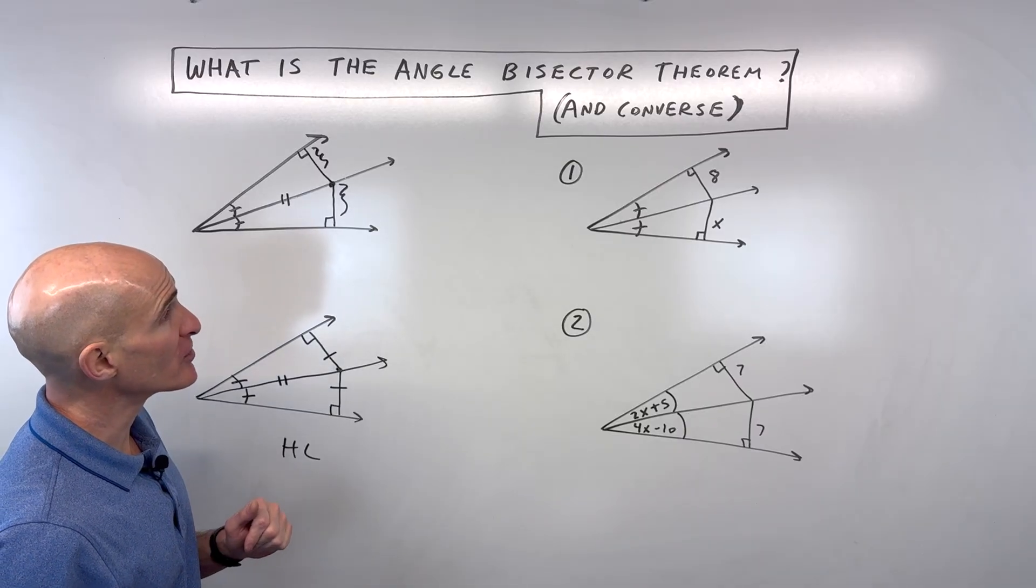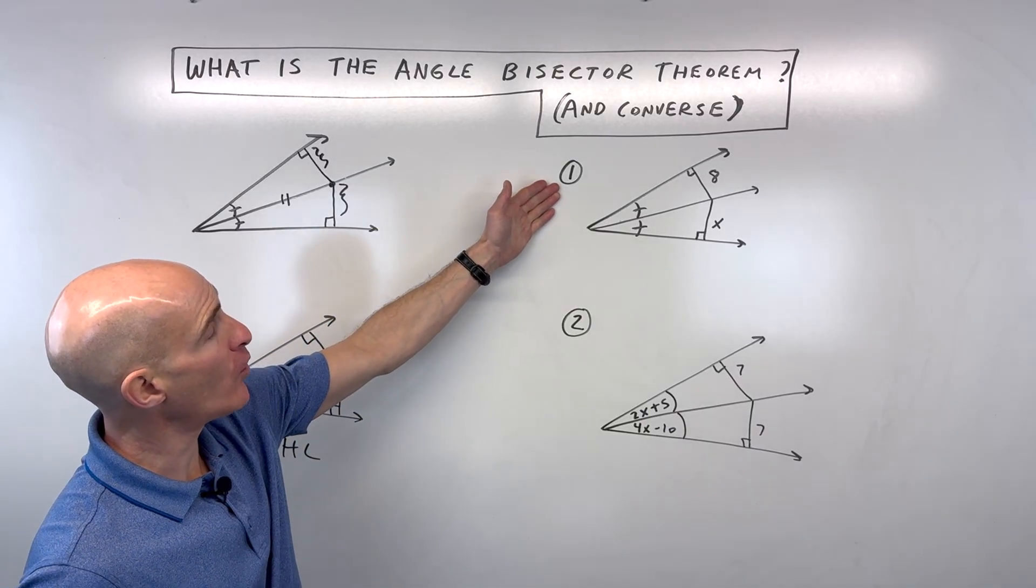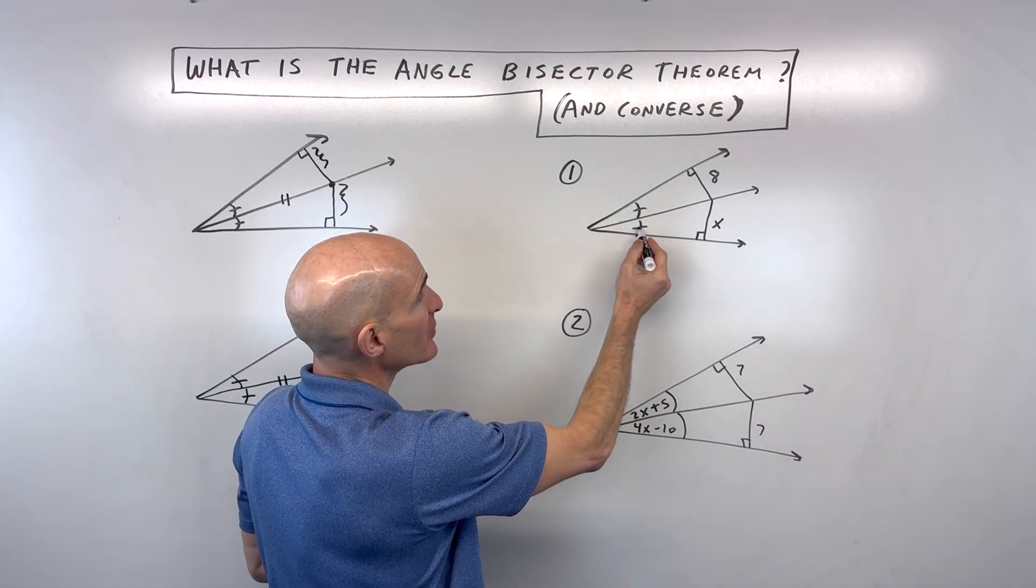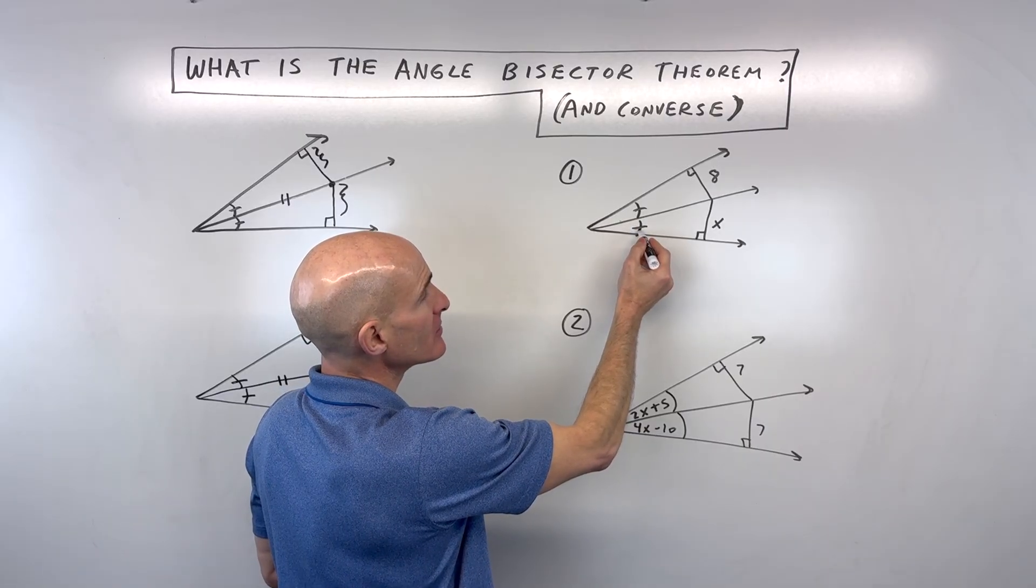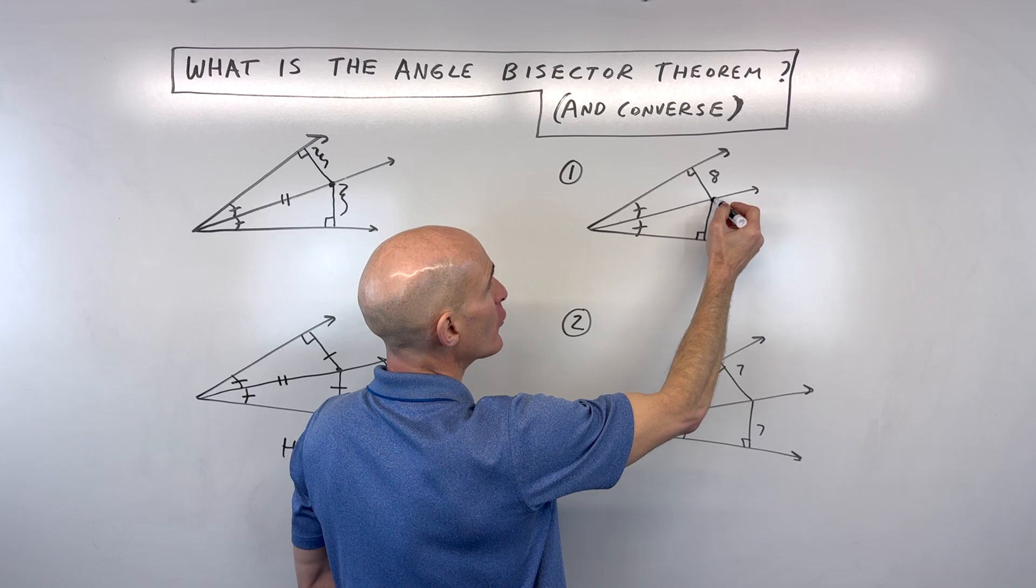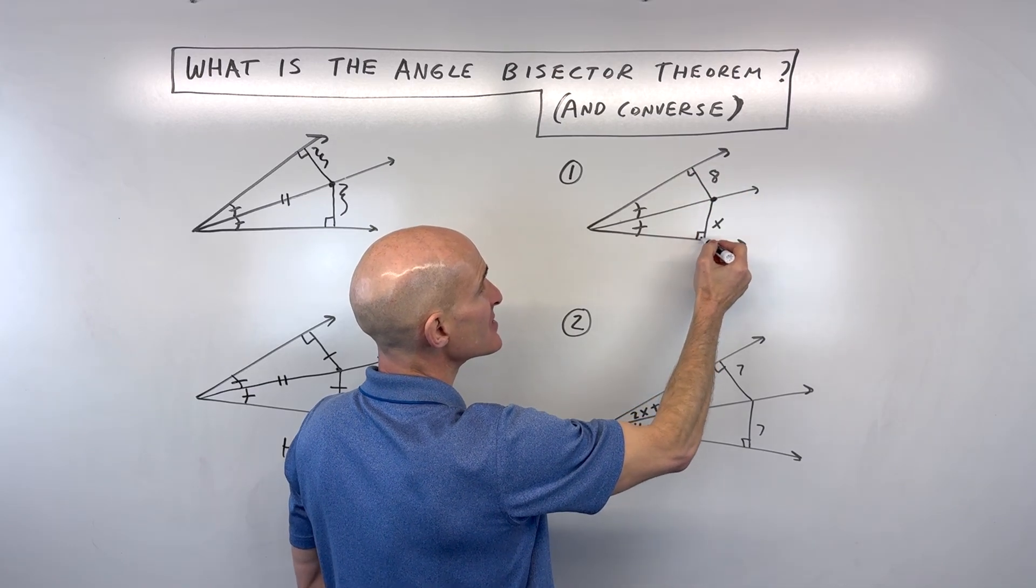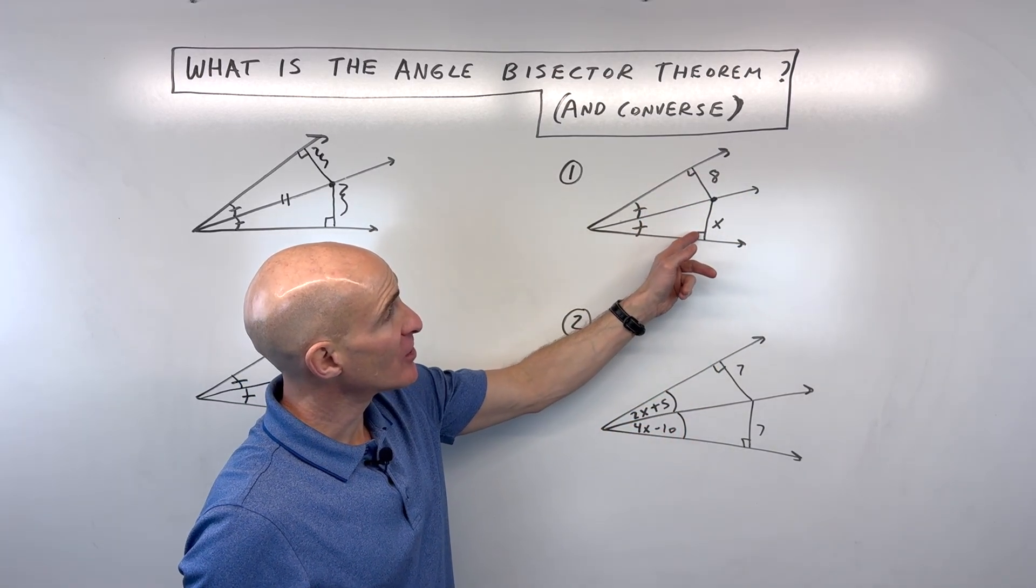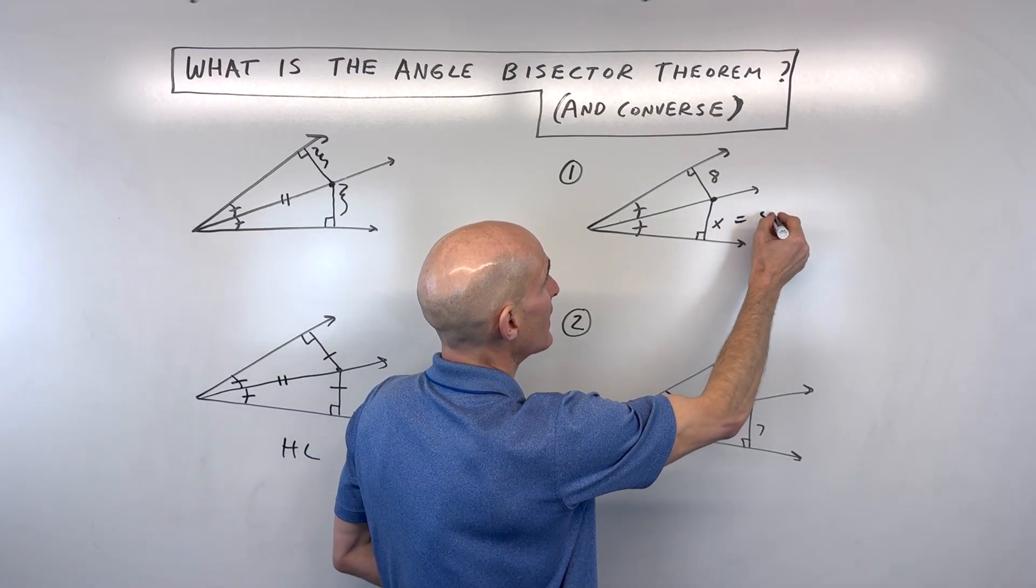Okay, so let's go through a couple examples so you can see how this works. So for number one, notice we have, they're giving us that this is an angle bisector, right? Because these angles are congruent. So if we have a point here on the angle bisector, what do we know about the distances to the sides of the angle? They must be congruent.